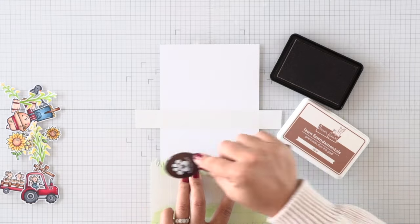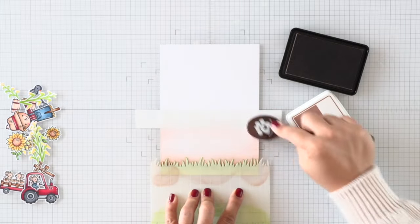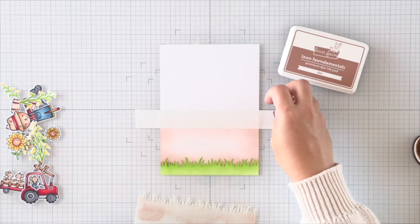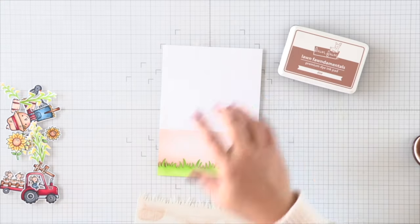So I'm ink blending here with the cloudy and grassy stencils. I'm working with the grassy stencil first at the bottom, and I'm blocking off a dirt area for the tractor. Then I'm going to lift my mask so that I can ink blend my cloudy sky using the cloudy stencil.